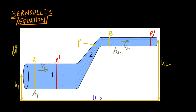To choose our system, I will imagine that the liquid contained between part A and B is the system. At some instant t there was some liquid, and then in a small time interval delta t this liquid moved — position A changed to A' and position B changed to B'. The amount of liquid delta m contained in segment A to A' is equal to the amount of liquid contained between B and B'.